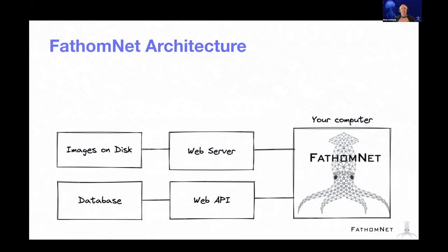The FathomNet architecture is super simple. The idea is that a group has images, they host them on a web server, and make those images public to the world. Then they can submit the location of those images and the localizations to FathomNet, and we store that information in a database which we expose to the world through our web API. A web API is a standard practice — it's really easy to write all kinds of software to it. You can write any program in basically any language to interact with the FathomNet API. The FathomNet website itself is a web application that runs in your browser.